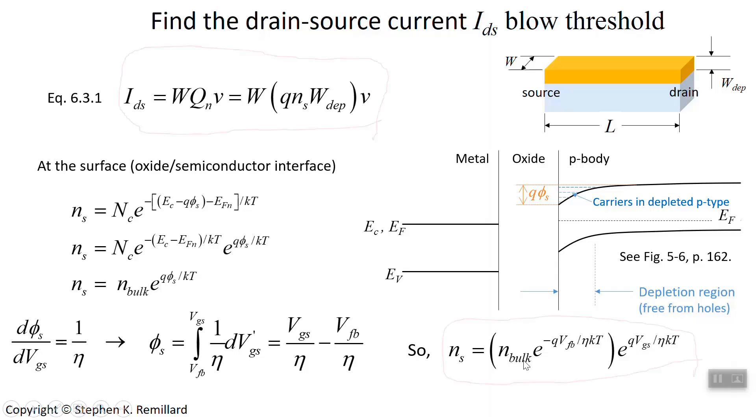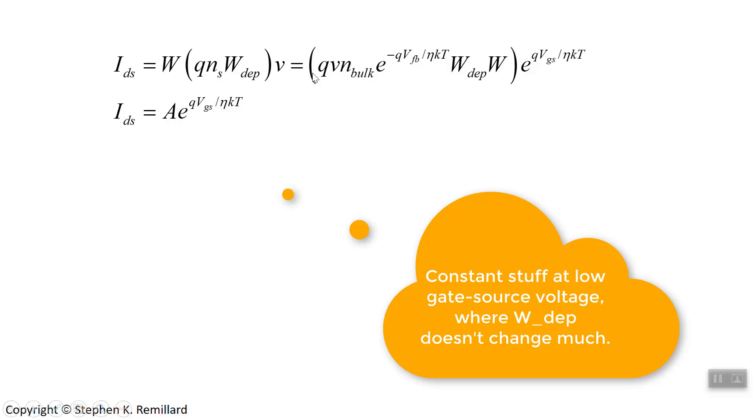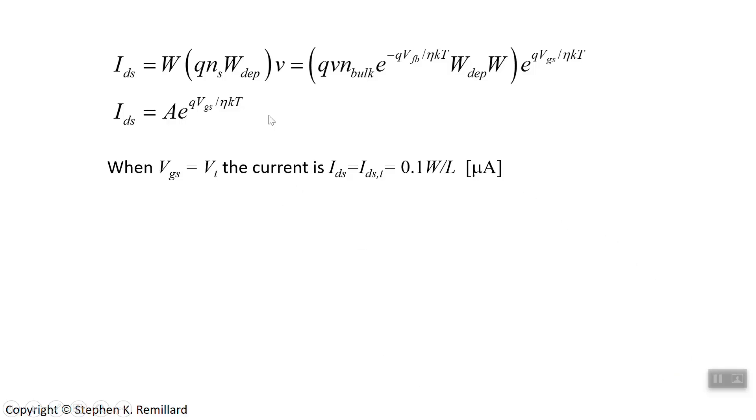So we'll use that. We'll take this n sub s and sub it in up there to have an expression for the drain source current. We're not going to mess around with anything else, because really all we want to know is how everything depends on the gate source voltage. That's what we want to figure out, how the drain source current depends on the gate source voltage. So we go back to this expression that we started with, put in what we just came up with for n sub s. And so it's all in there. You know, so w stays, w depletion stays, velocity stays, q stays. And I'll just say what's in parentheses, I'm going to call it big A. It's basically constant stuff. So we'll just call it big A.